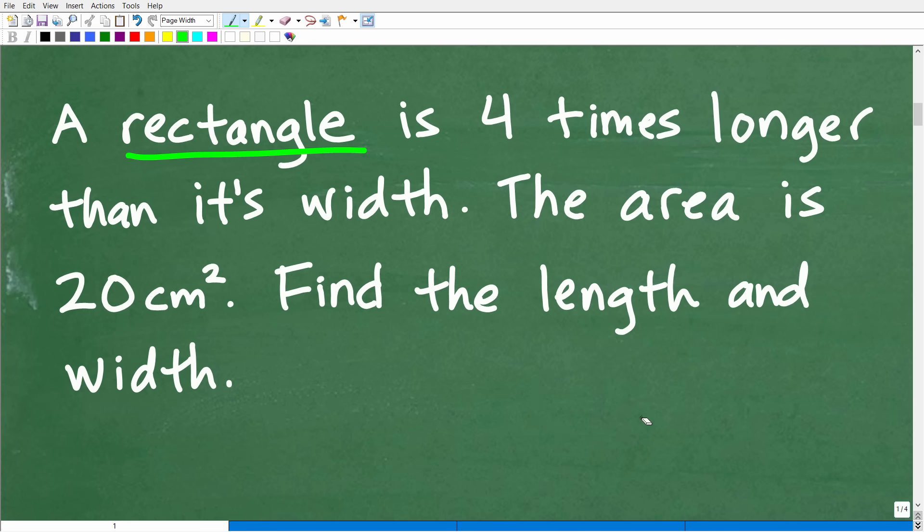Now, before I show you this little rectangle, we need to kind of use a variable here because we have an unknown value. So we're trying to determine the length and the width, but there's a relationship between the length and the width. So we have to establish some variable. I'll use the variable X and let's make this easy on ourself. Let's let the width be equal to this variable X. So whatever the width is, let's let that equal to X.